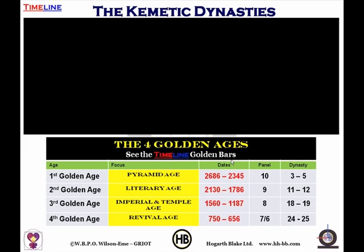The third golden age is the imperial and temple age, going from 1560 BC to 1187 BC — that's panel 8, dynasties 18 through 19. Interestingly, this is the period where Moses is thought to have existed.